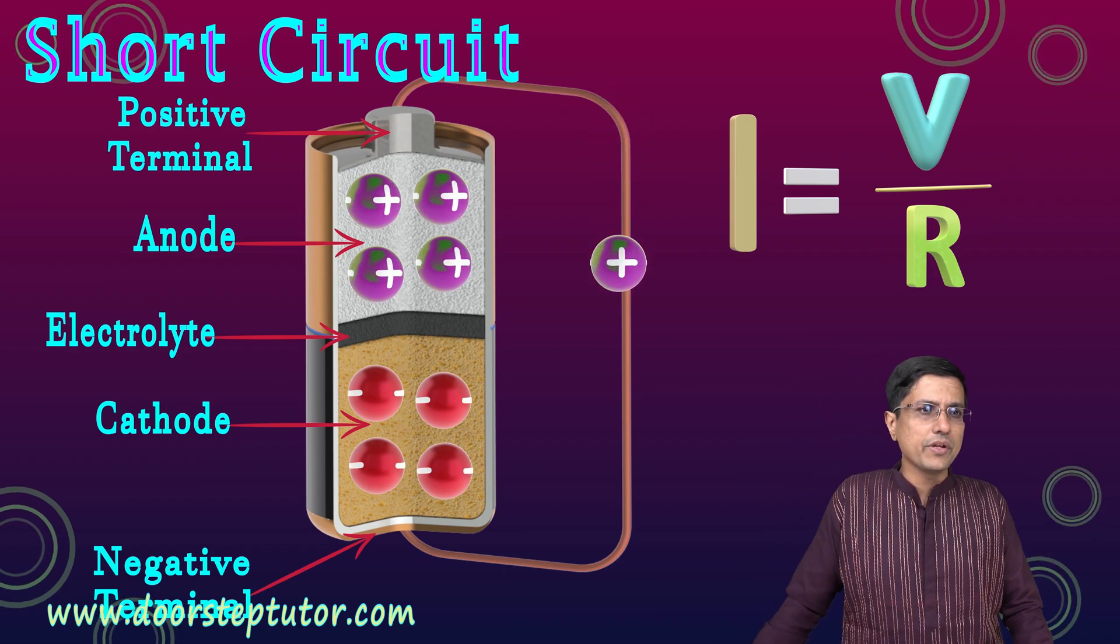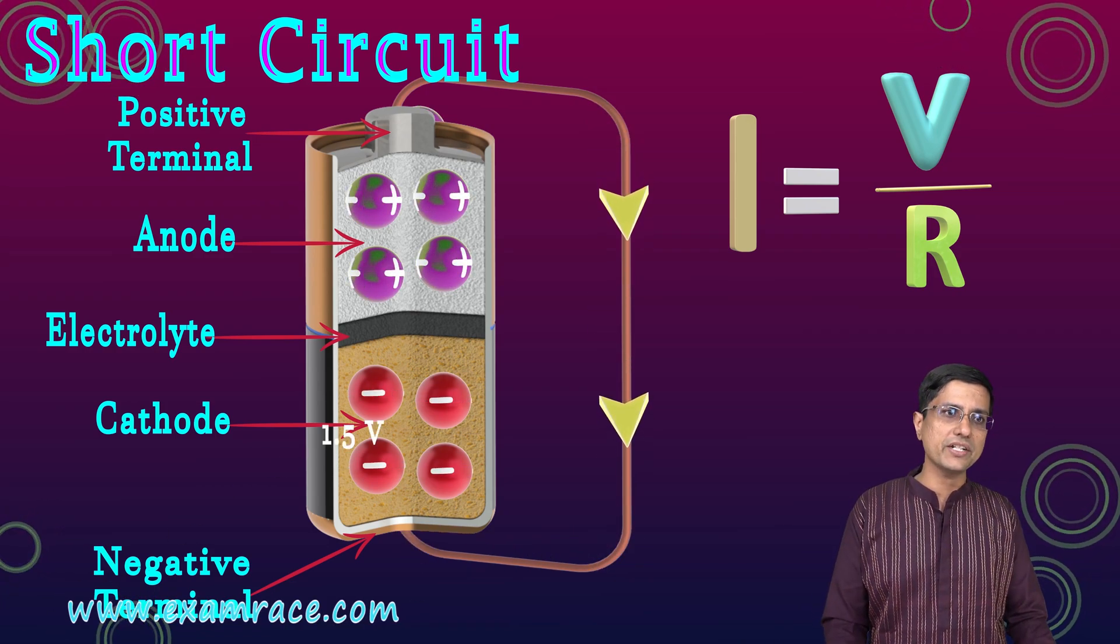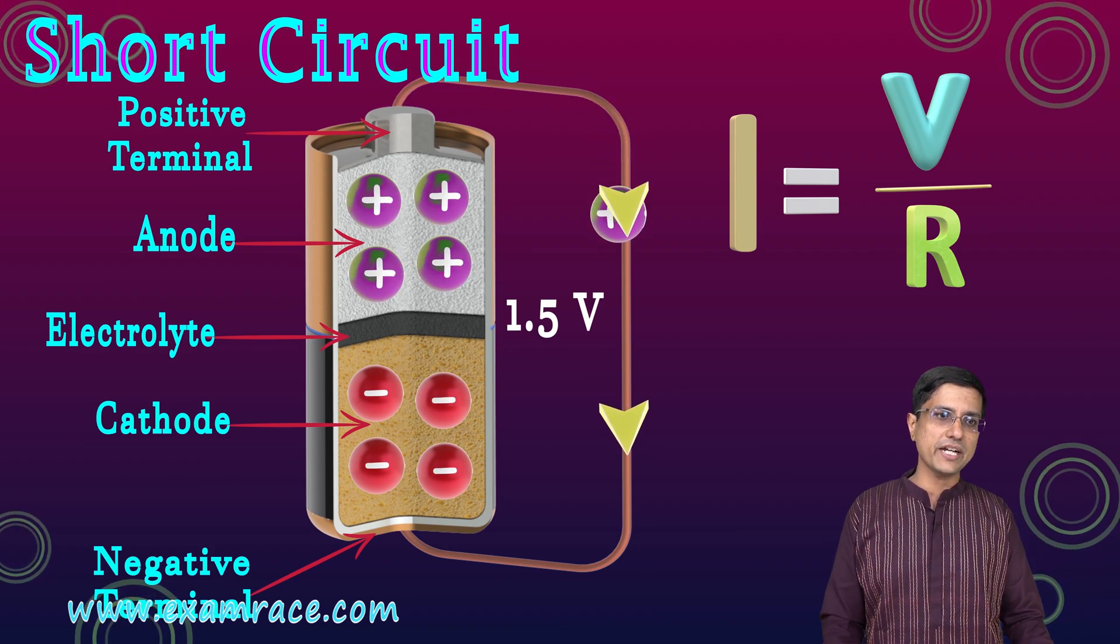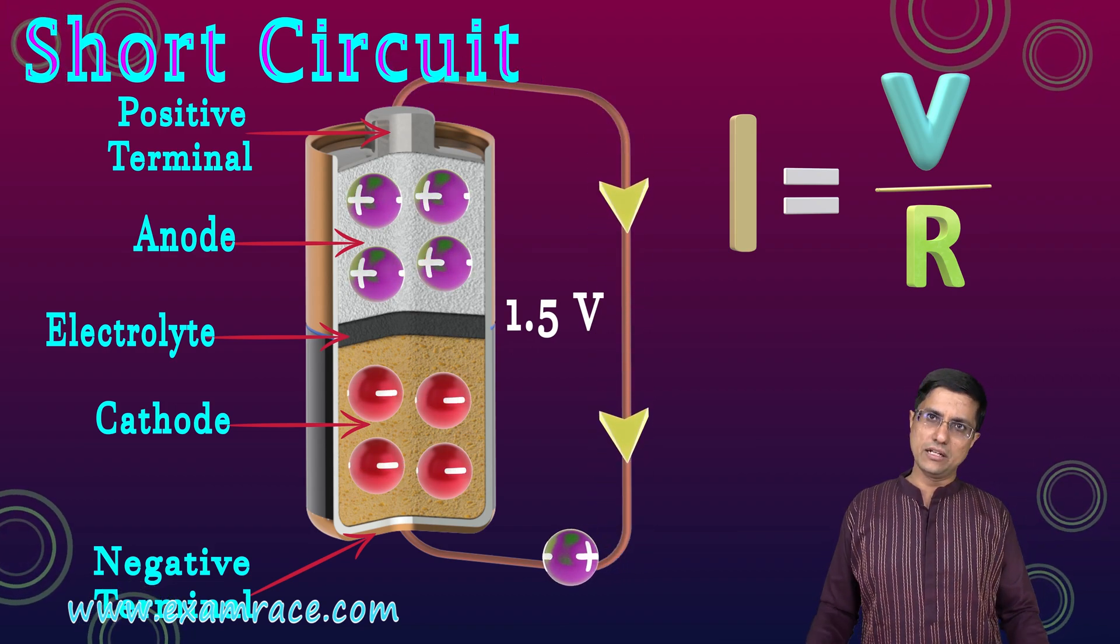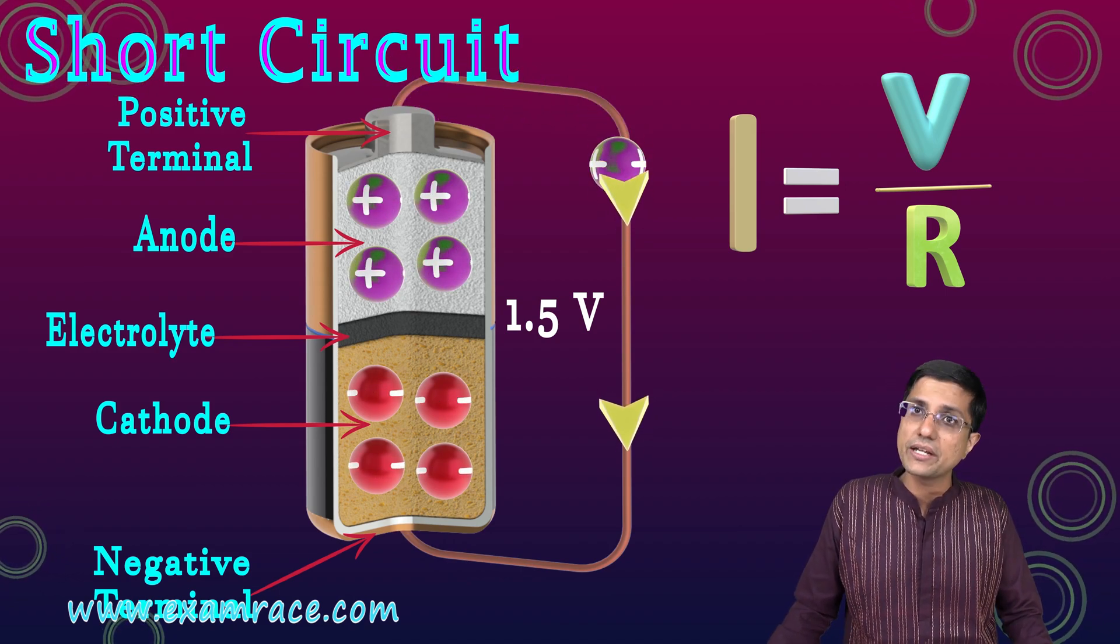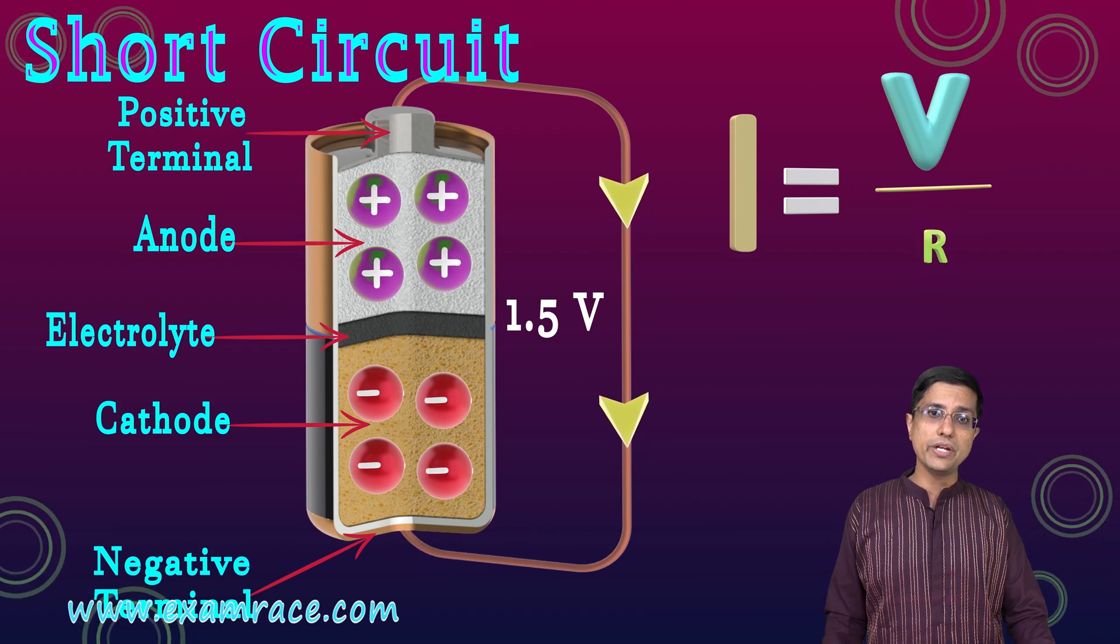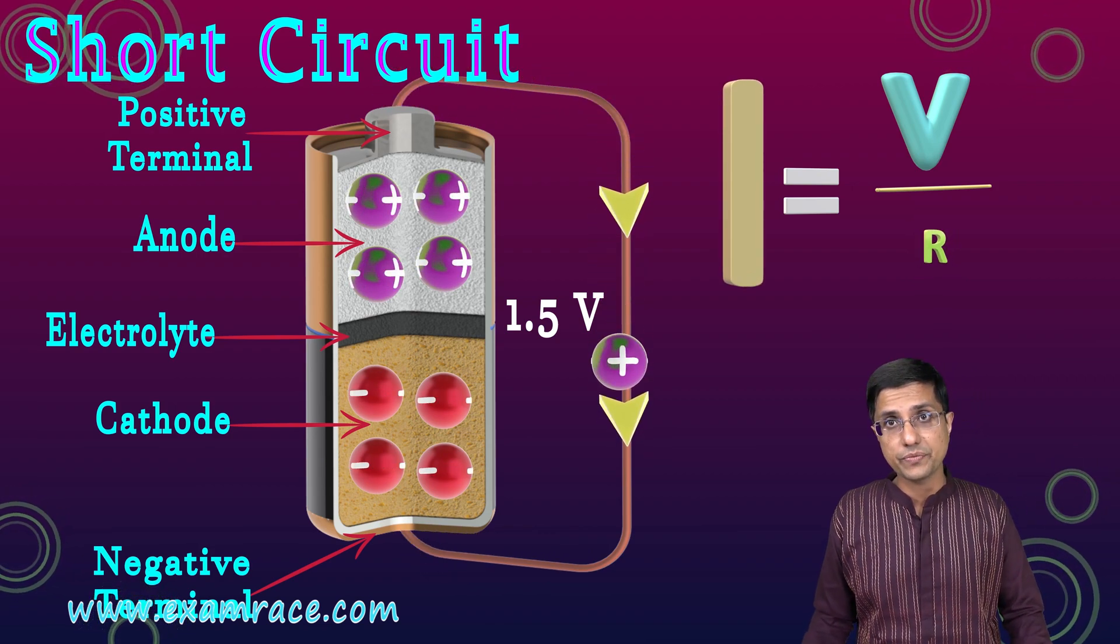What would happen then? The electrons would start flowing, the current would start flowing, the traditional current would start flowing from the positive side to the negative side. Large amounts of electrons would start flowing from negative to positive side because the resistance of this wire is very very low. So the current would be very very large.